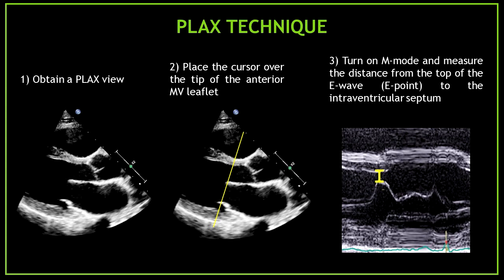Let's review the parasternal long axis technique to obtain the mitral valve E-point septal separation — three easy steps. Number one: obtain a parasternal long axis view. Number two: place the cursor over the tip of the anterior mitral valve leaflet. Number three: turn on M-mode and measure the distance from the top of the E-wave, which is the E-point, to the septum.